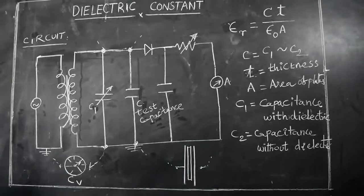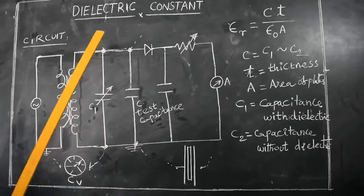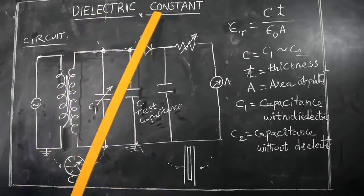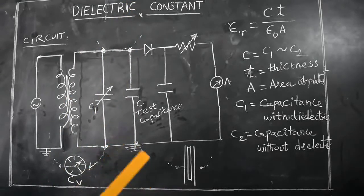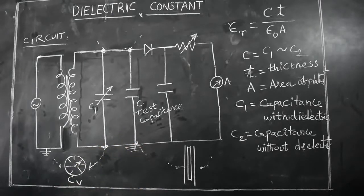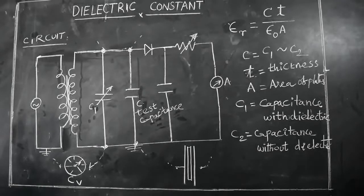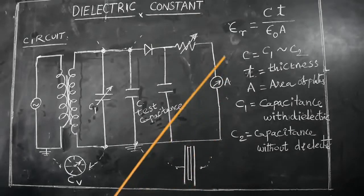Welcome to our practical session. Today we are learning about how to measure the dielectric constant of a dielectric material. We know that a dielectric material partially allows electric current through it. This dielectric material has many applications in present technology. The dielectric constant is represented by epsilon r.